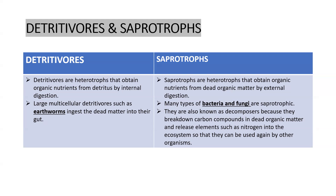Both are feeding on dead organs — dead remains of plants and animals, which is detritus. That is the raw material which both are using. But what is the basic difference between them?